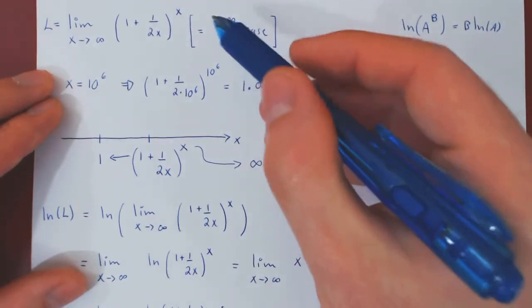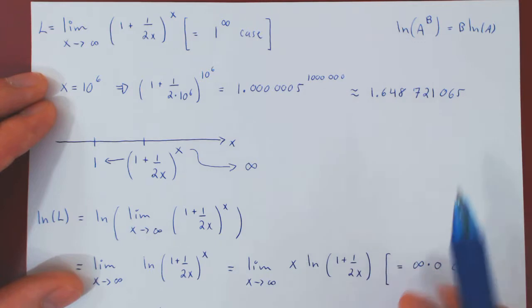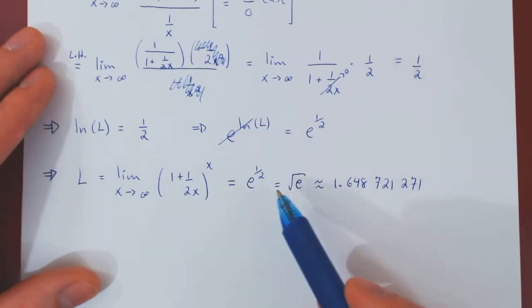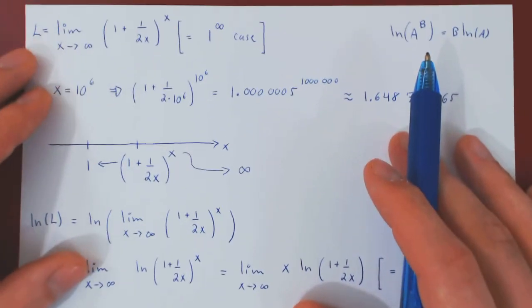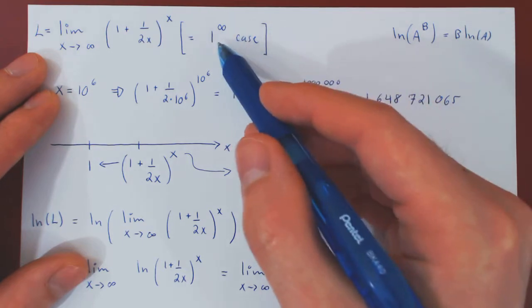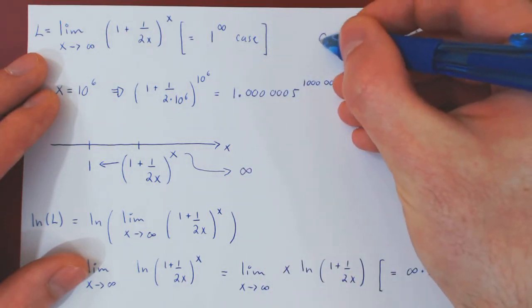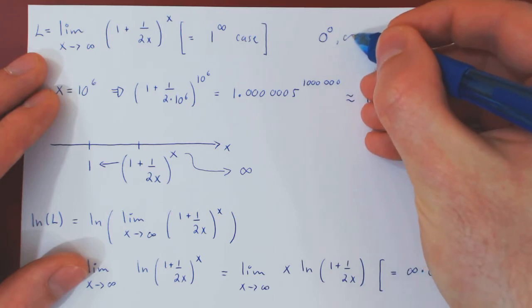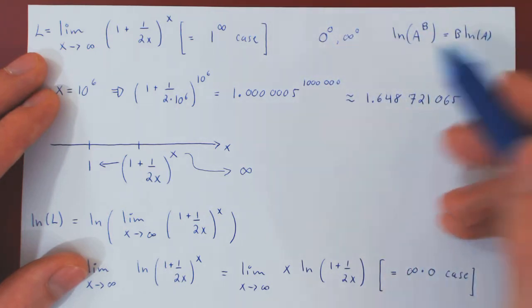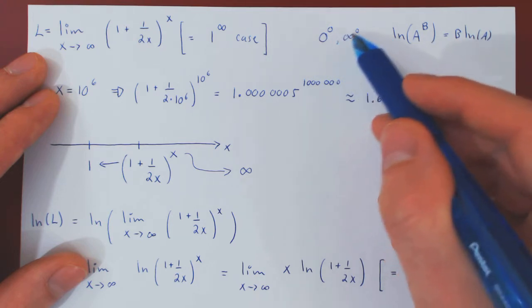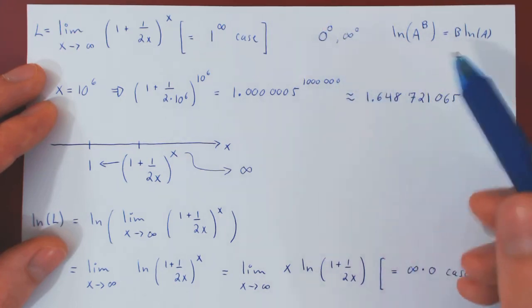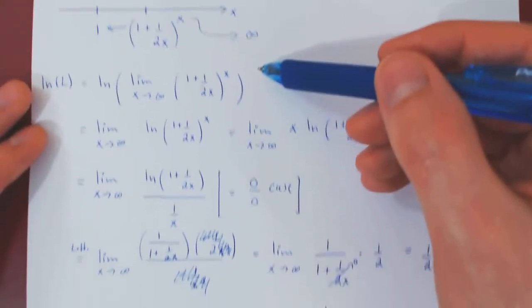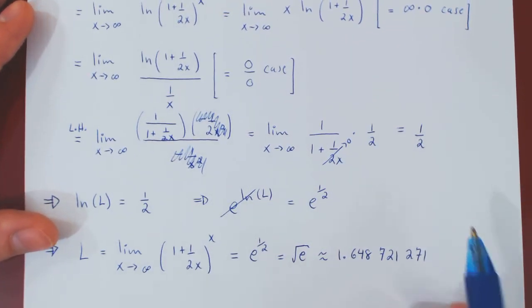And hopefully, at the same time, this convinces you that a case of the form 1 to the infinity is non-trivial, as the answer clearly was not equal to 1, but the square root of E. That's a rather unexpected answer. And as an aside, you can tackle cases of the form 0 to the 0, or infinity to the 0, using the exact same idea. Those two cases are also non-trivial, and I will let you think about why they are non-trivial. But to tackle such limits, the exact same solution here can be applied. And that's it.